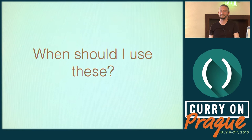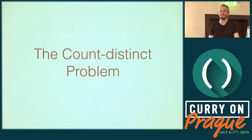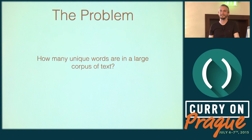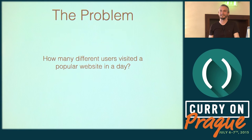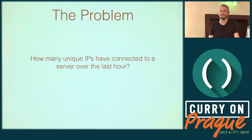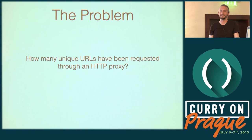When you ask someone what their acceptable error rate is, they say 'nothing.' But that's not actually true. Considering that the world is probabilistic — network cards die, cables are cut, configuration errors occur, machines burst into flames — the acceptable error rate for your real-world problems is almost certainly not zero.